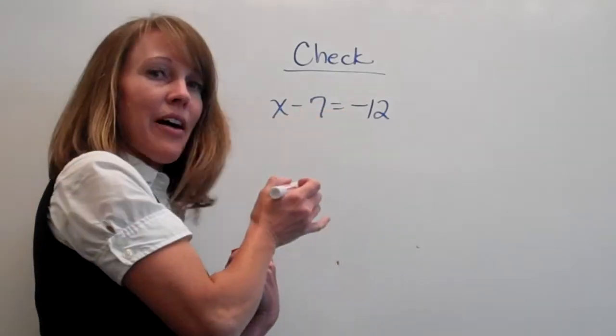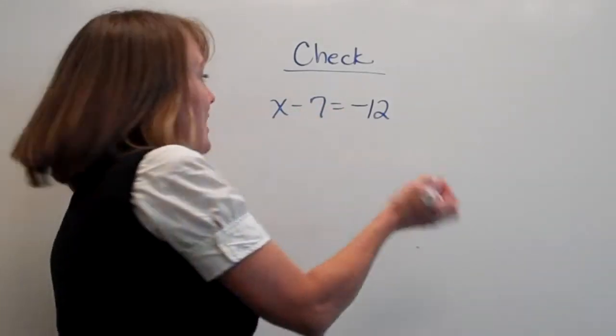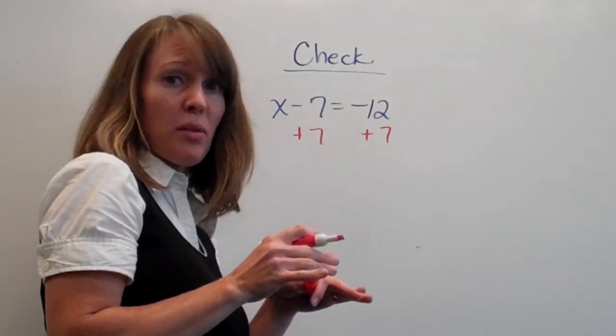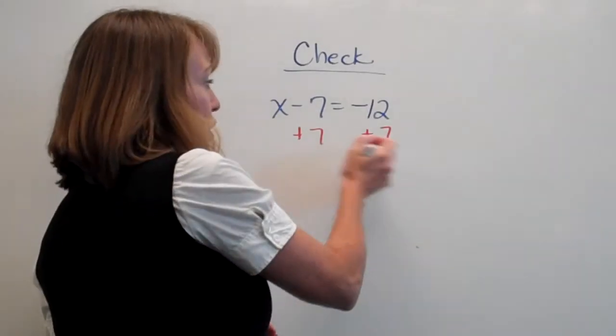Well, this is a minus 7. And the opposite of minus 7 is adding 7. So remember, I need to balance my teeter-totter so I'm not launching the little guy. So I do it on both sides.